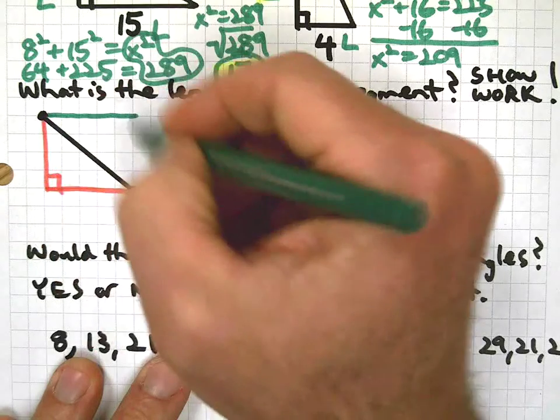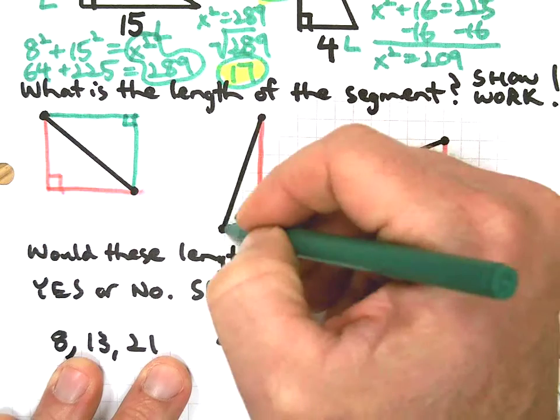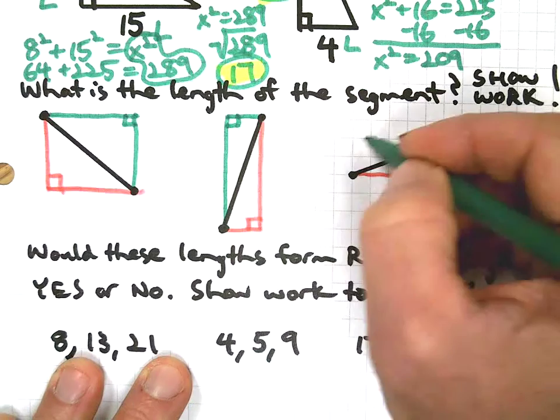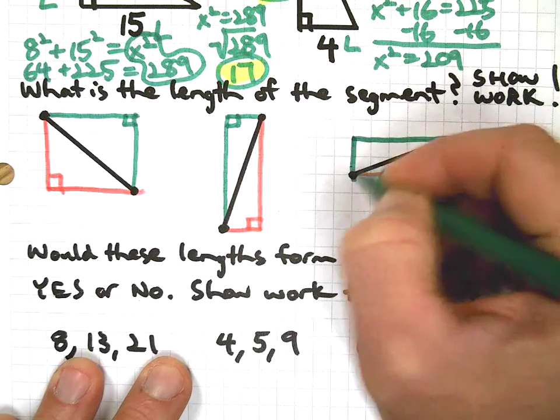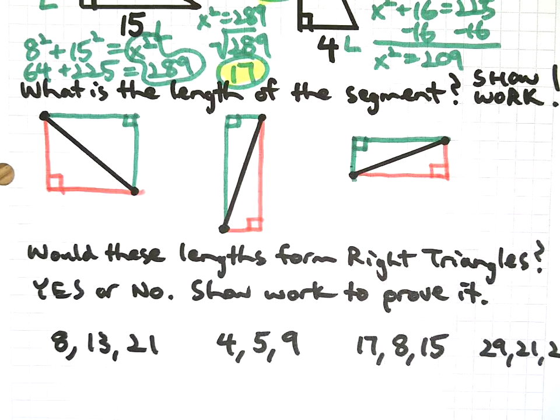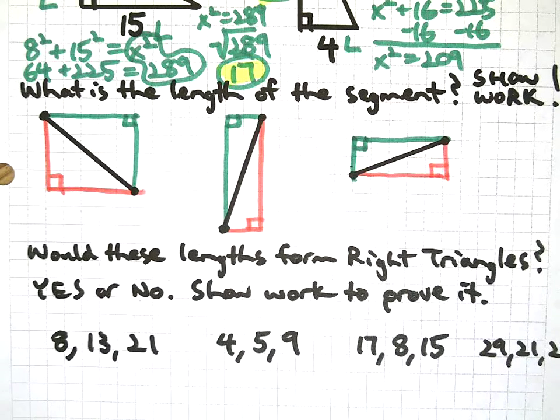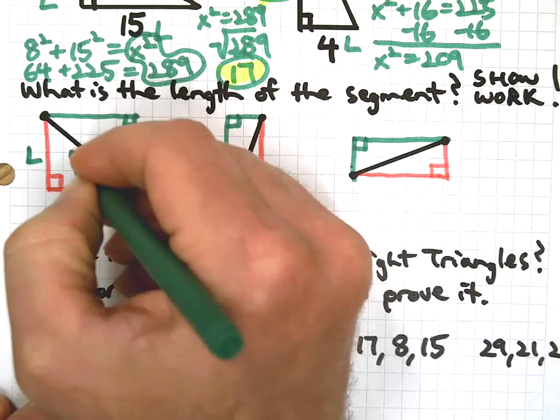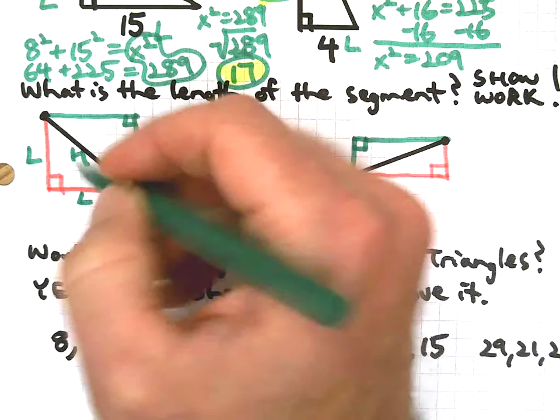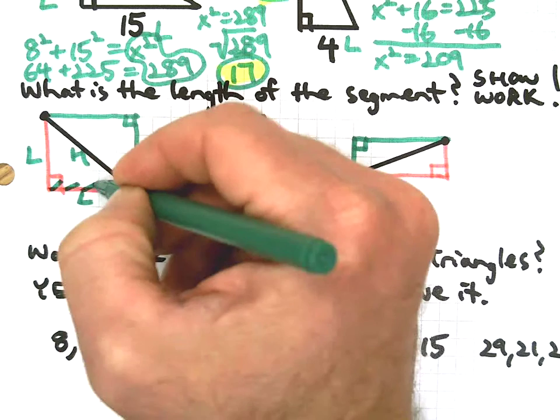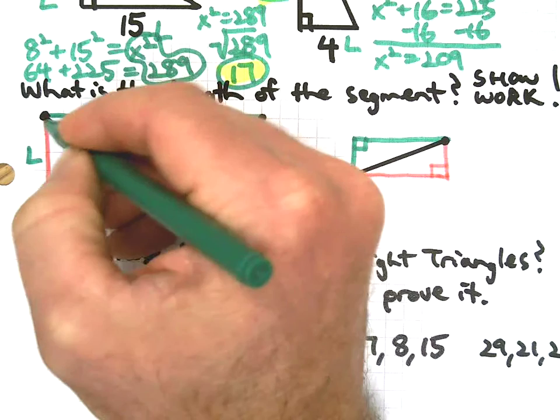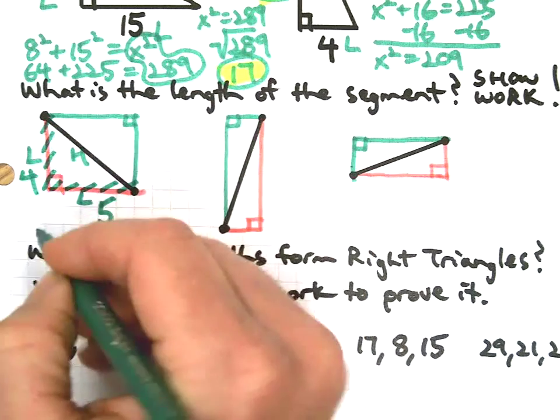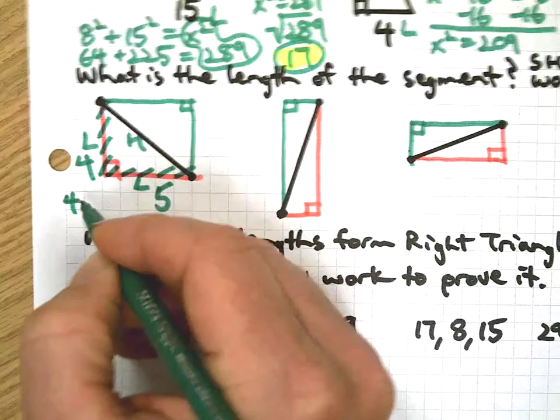Right now it does not matter where you draw the triangle. For example, I could draw it over here and I would end up with the exact same answer, so it really doesn't matter. And if you want to prove it, go ahead and do it. Okay, that's how we discover things in math. But I have leg, leg, hypotenuse. This is 1, 2, 3, 4, 5. This is 1, 2, 3, 4. So this one's going to be 4 squared plus 5 squared, and then we'll take the square root.